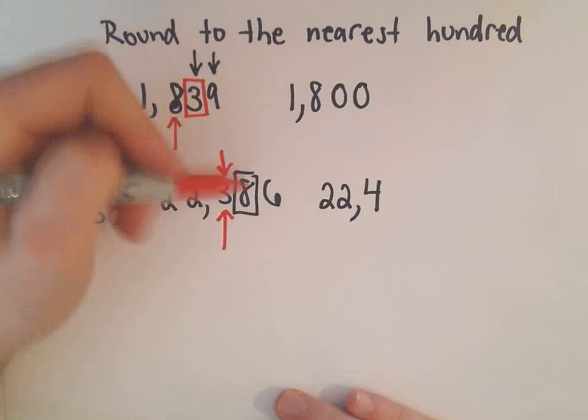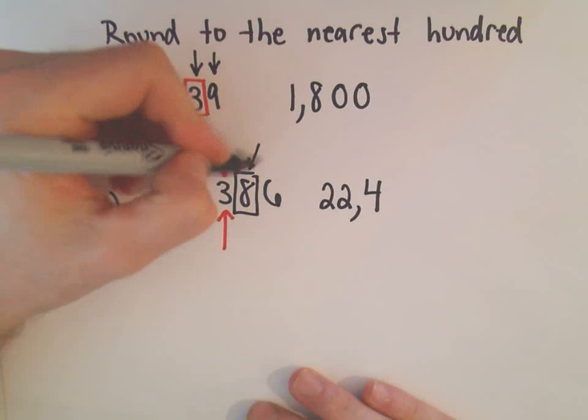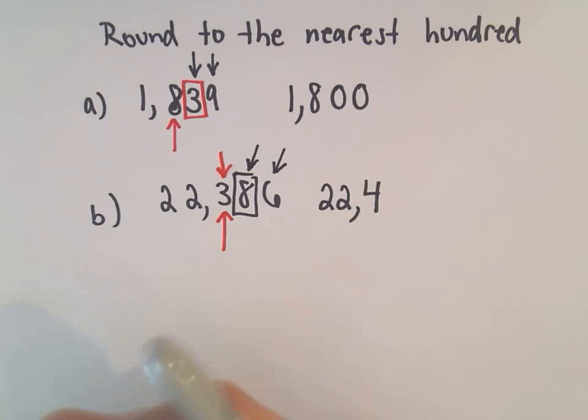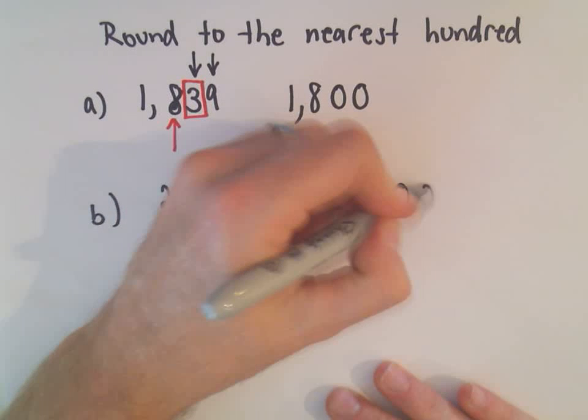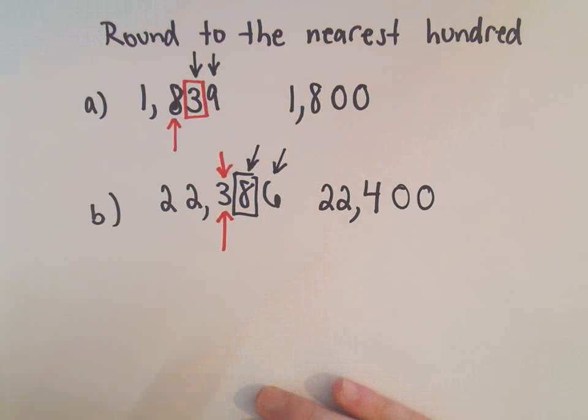And then it says I change everything to the right, I change everything to the right of the digit that was rounded into zeros. And again, now we've rounded our two numbers to the nearest hundred.